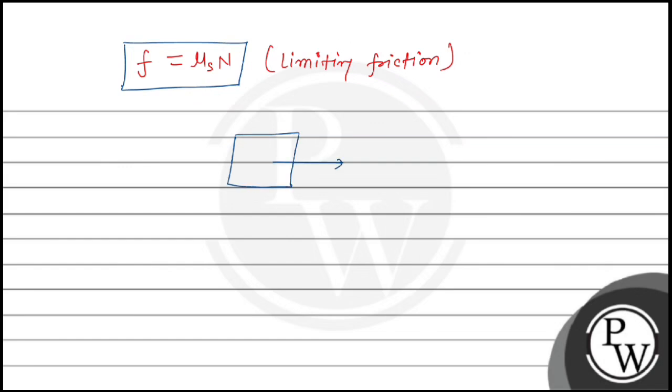F cos 30, which is F√3/2, equals the limiting friction. So we can write F√3/2 equals μs × N.